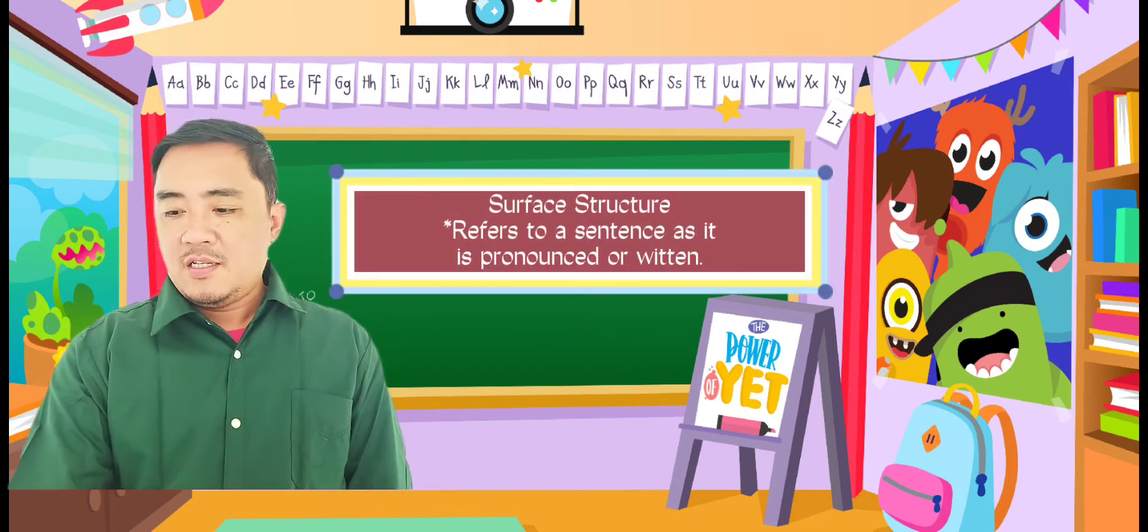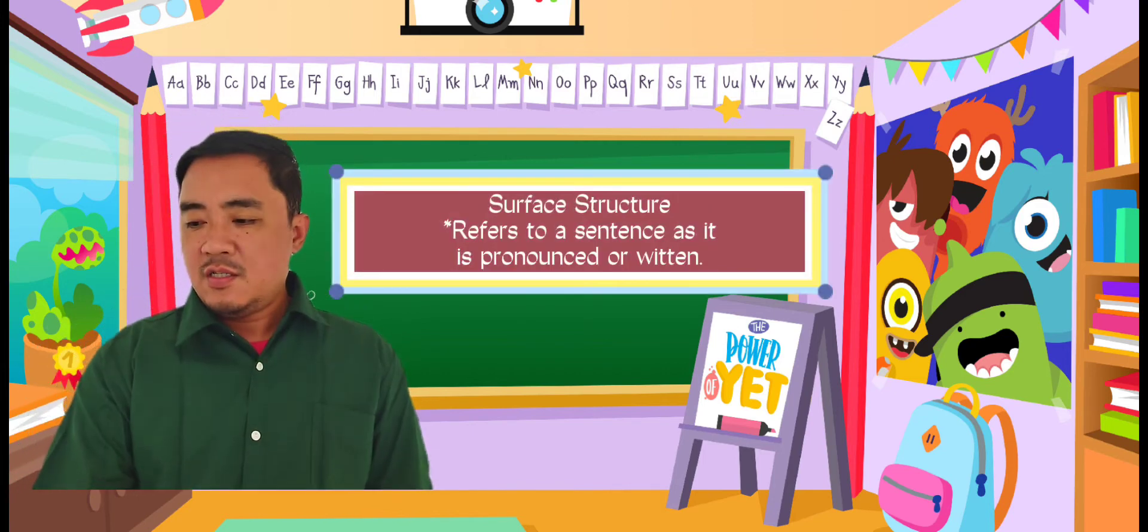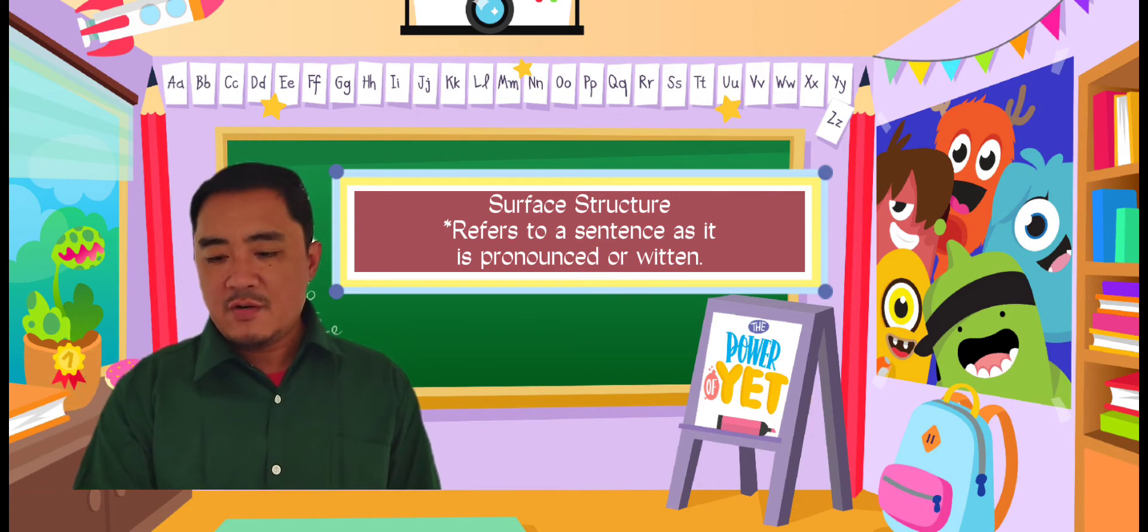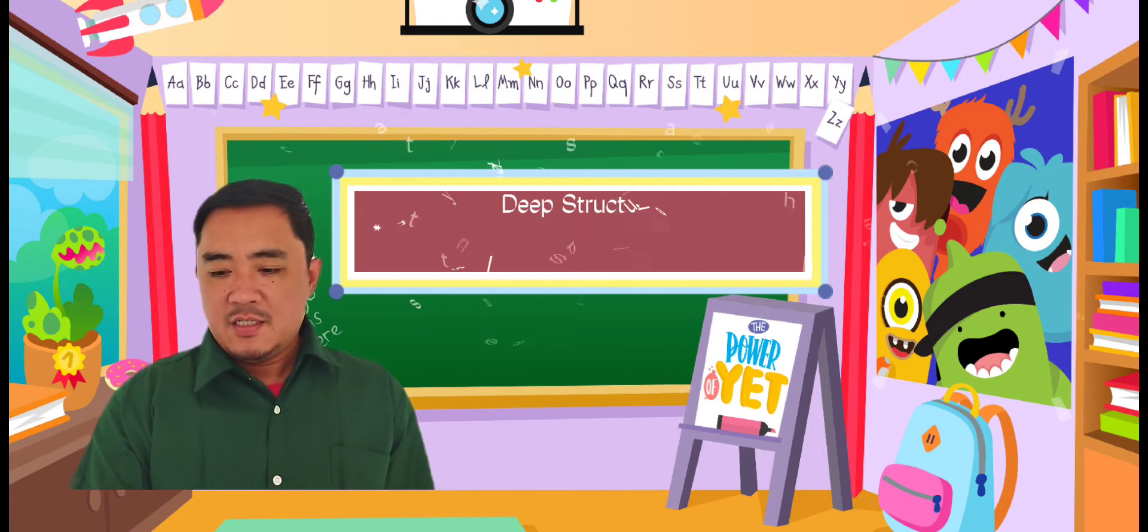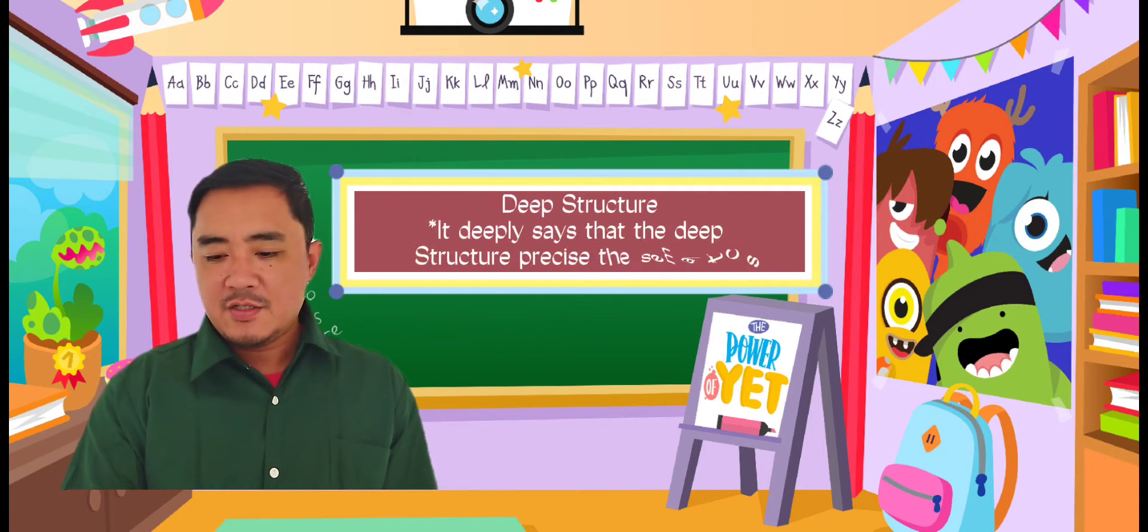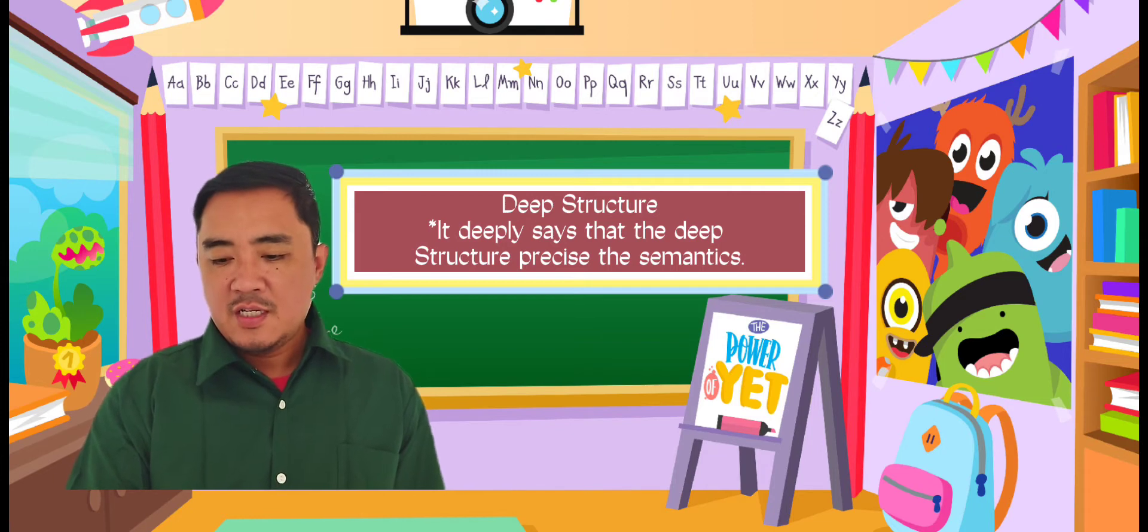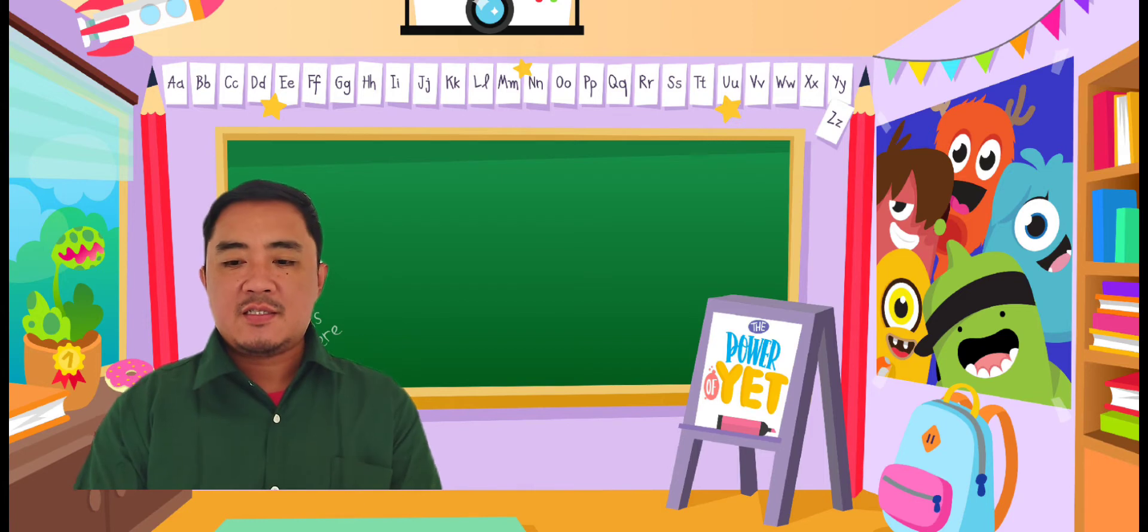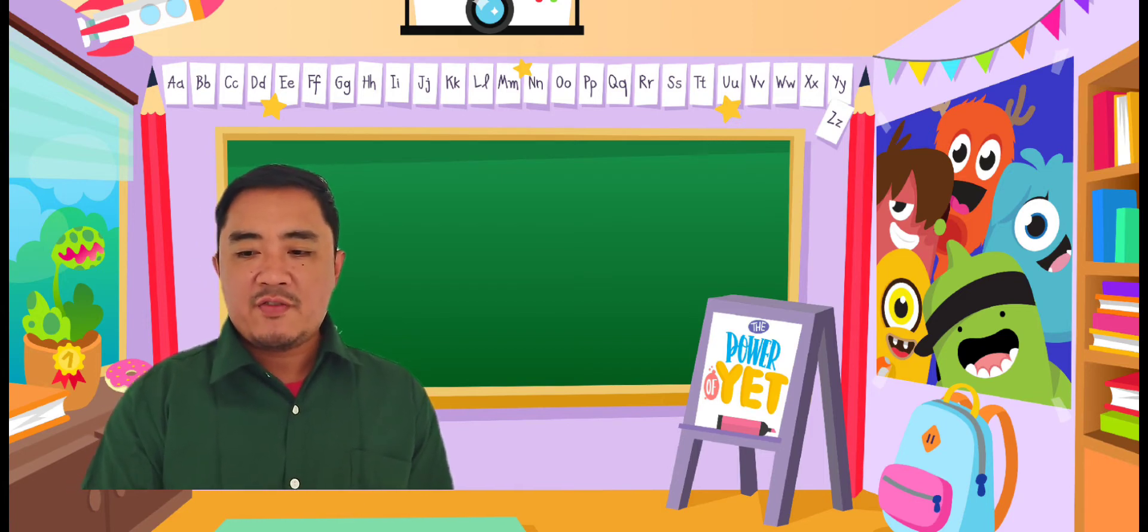Surface structure is the actually produced structure. It refers to the sentence as it is pronounced or written. The deep structure is the abstract structure that allows the native speaker of a language to know what the sentence means. The deep structure expresses the semantic content of a sentence, whereas the surface structure determines its phonetic form.